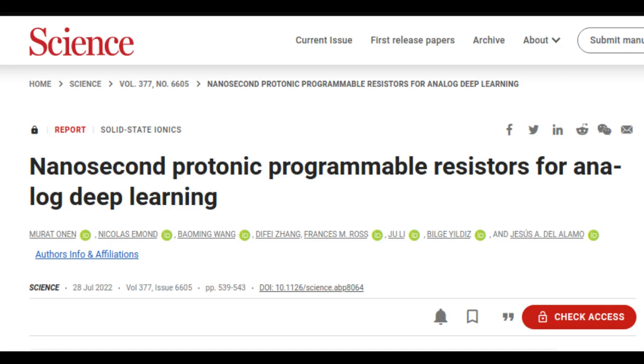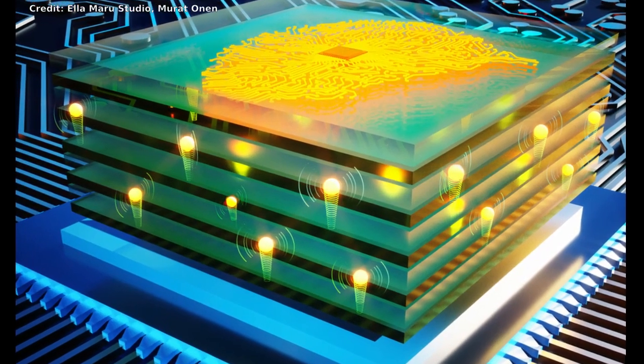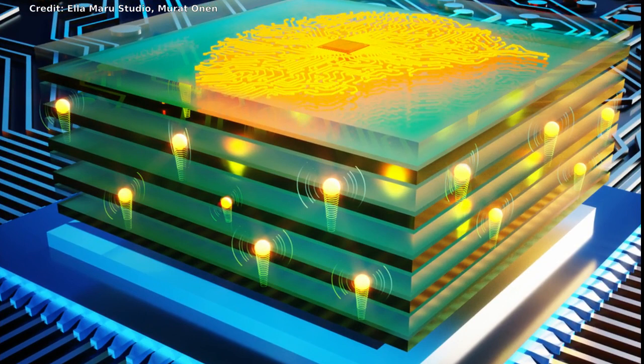By repeating arrays of programmable resistors in complex layers, researchers can create a network of analog artificial neurons and synapses that execute computations just like a digital neural network. This network can then be trained to achieve complex AI tasks like image recognition and natural language processing.